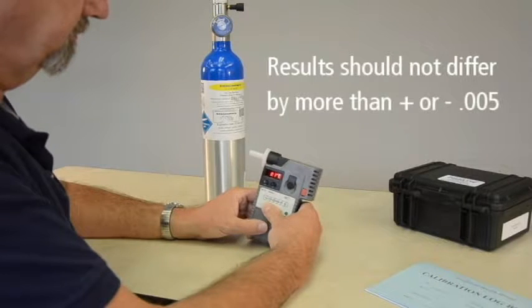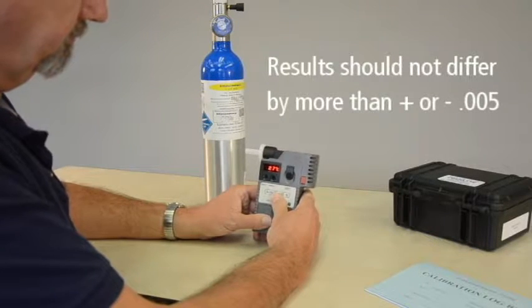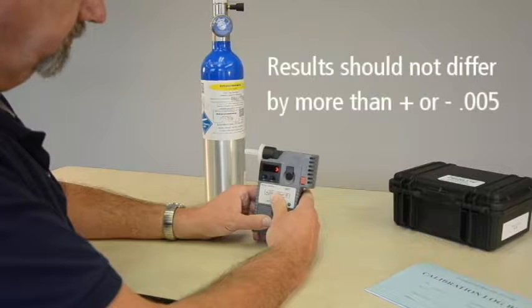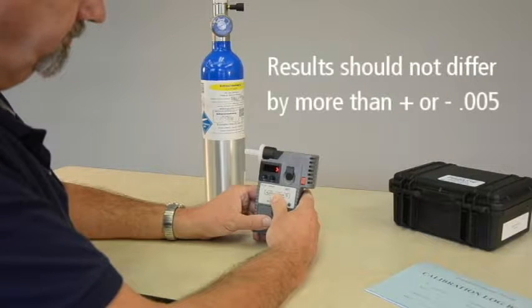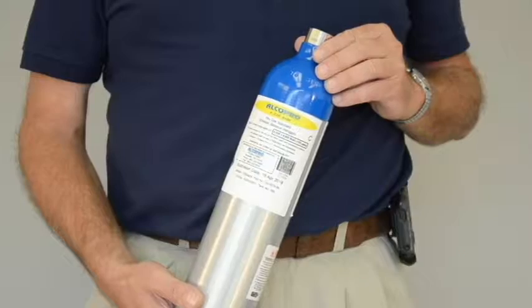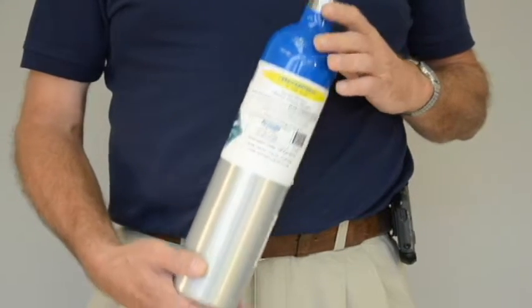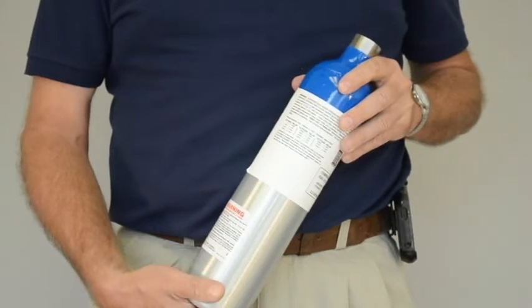The result of your accuracy checks should not differ by more than plus or minus .005 from the expected value of the standard gas sample. The expected or target value of your gas standard can be derived by referencing the altitude chart on the back of your tank.